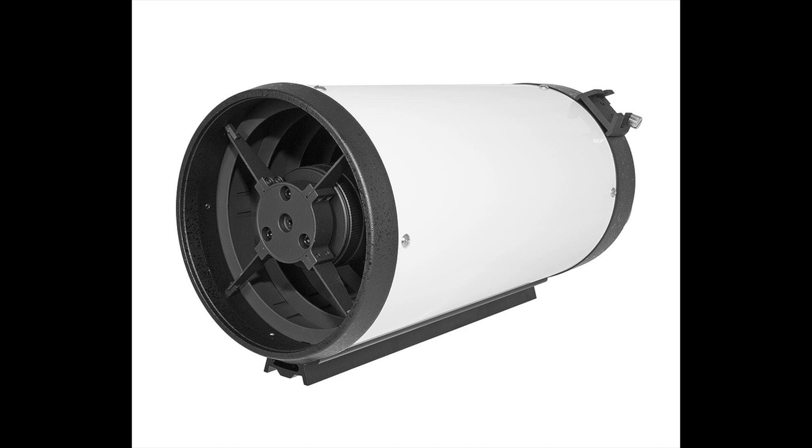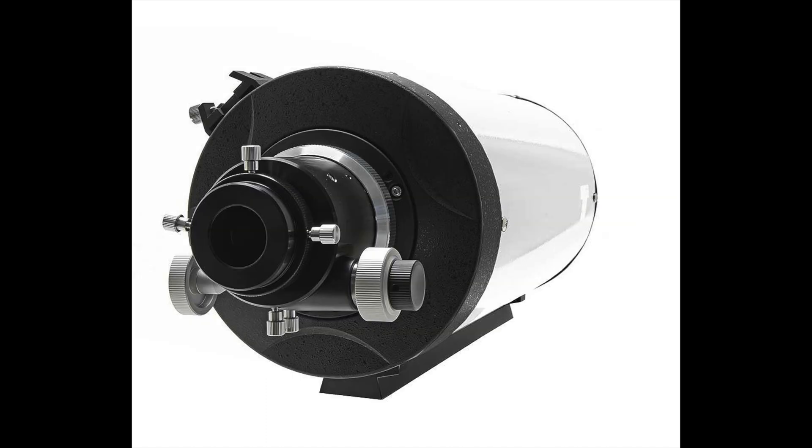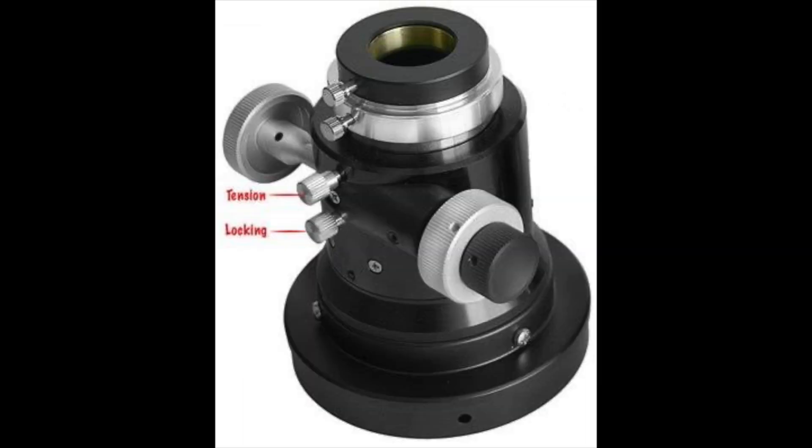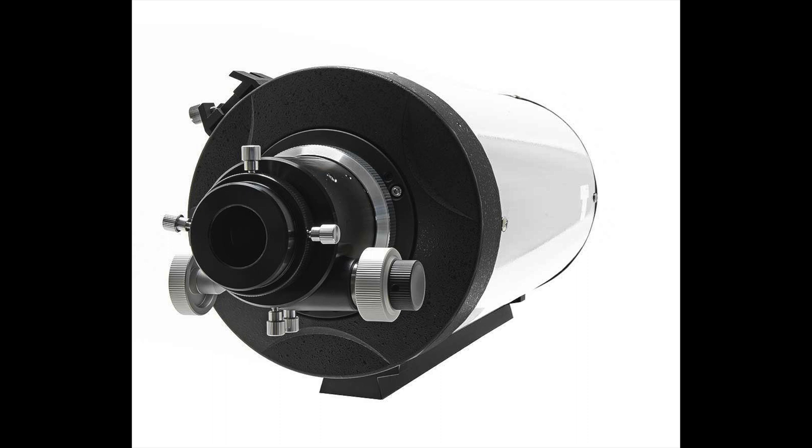When talking about a classical Cassegrain telescope, its primary mirror is parabolic and its secondary mirror is hyperbolic. The primary mirror is fixed. The primary has six collimation screws and the secondary has three collimation screws with a center screw.